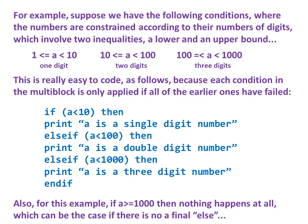This is really easy to code as follows, because each condition in the multi-block is only applied if all of the earlier ones have failed. So we simply get the following. If a is less than 10, then print a is a single-digit number. Else if a is less than 100, then print a is a double-digit number. Else if a is less than 1000, then print a is a three-digit number. End if.